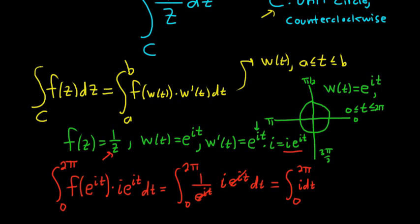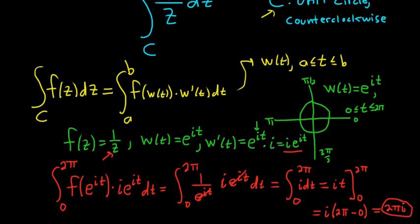i is a constant, so when you integrate it you just get it, and we're going from 0 to 2π. Plug in 2π first: you get i times 2π, then subtract i times 0, which is 0. So the final answer to this problem is 2πi. That's it.